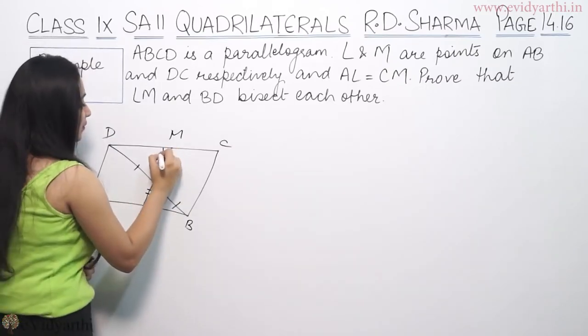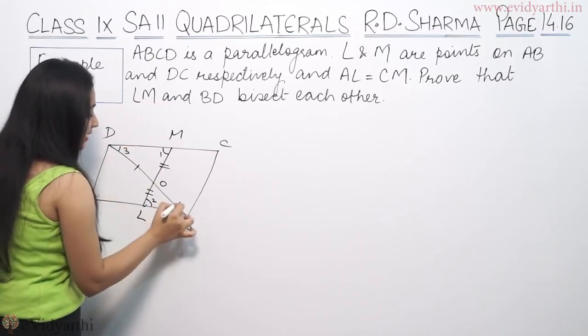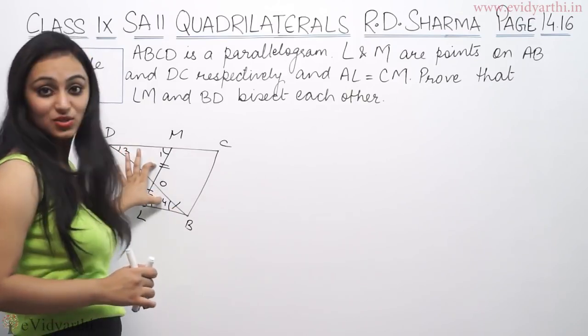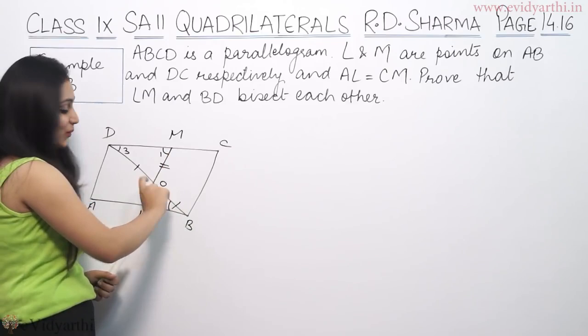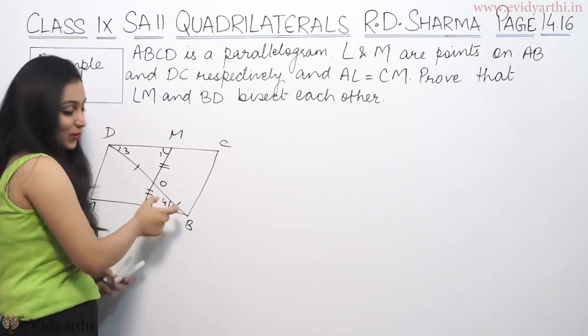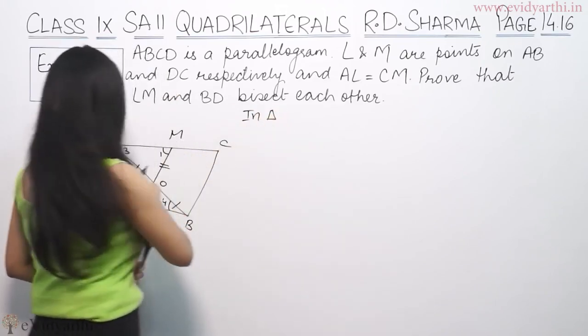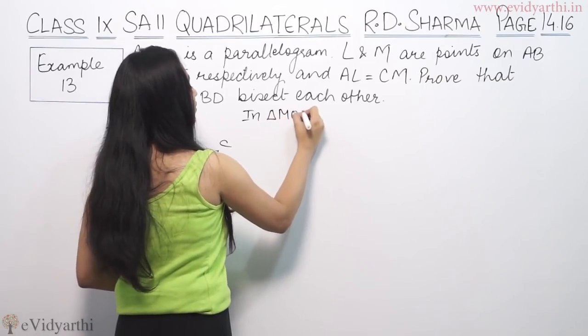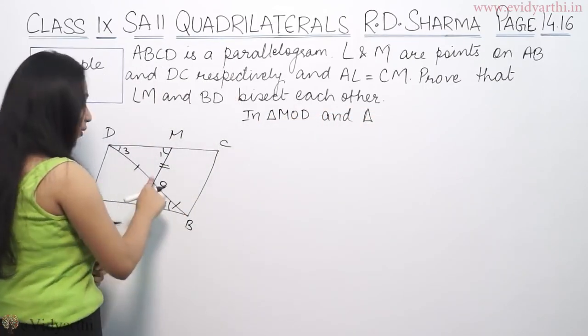Suppose this is angle 1, this is 2, this is 3 and this angle is 4. So sab se pehle in dono triangles ko, if we have to prove, we can prove that these lines are equal. So in triangle MOD and triangle BOL.